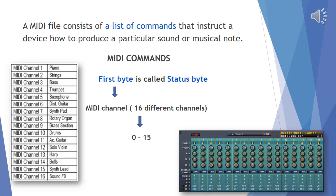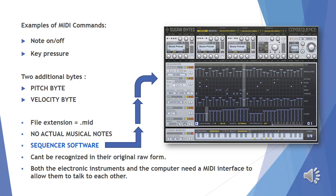Encoded in the status byte is the MIDI channel. MIDI operates on 16 different channels, which are numbered 0 to 15. There are two examples of MIDI commands: the first one is Note On/Off, and the second is Key Pressure.